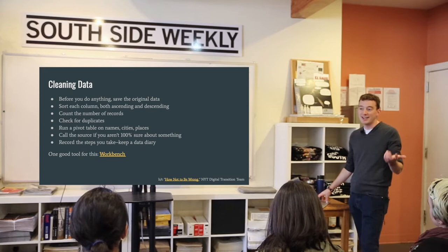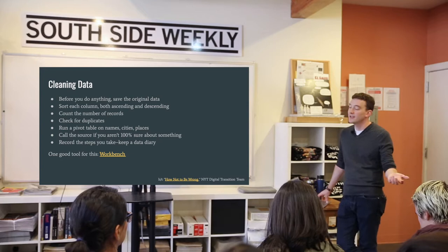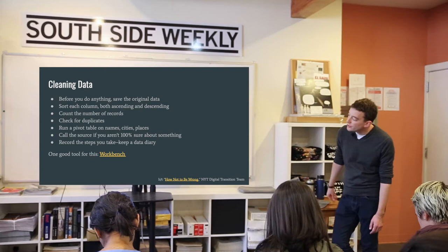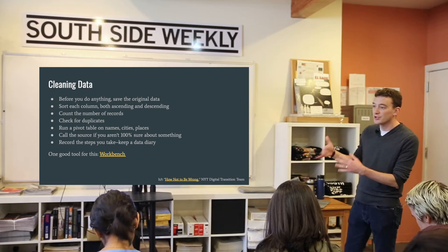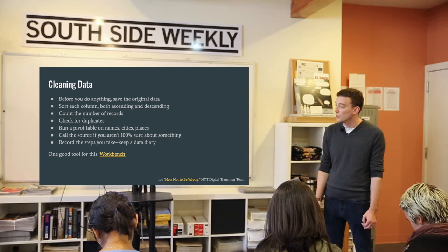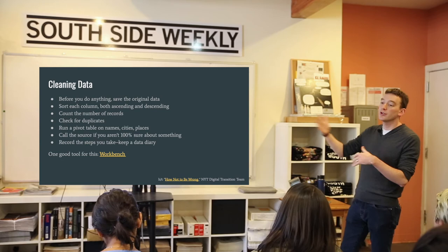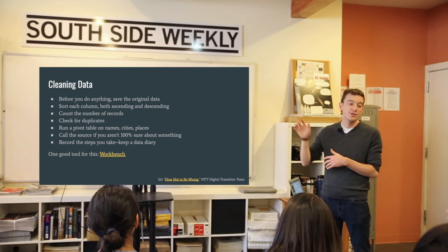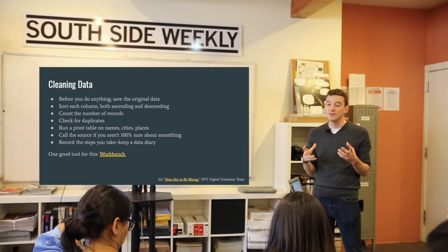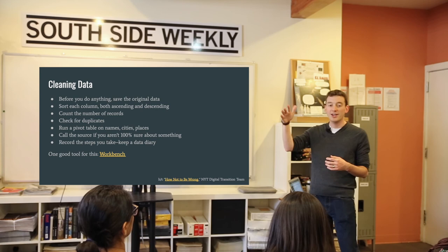Record the steps that you take. Keep a diary of everything that you do so that if you are cleaning things or making changes to the data, you can always go back and double check it. There's a cool free tool for this called Workbench — I think it's workbenchdata.com. It basically does all those steps for you or makes them really easy. In your browser, you can pull in data from a data portal or upload a spreadsheet, and then do cleaning: sort, filter, check names, run pivot tables — and it records every step for you along the way. So you can go back and redo it or replicate it if new data comes in.